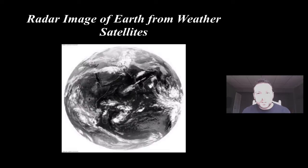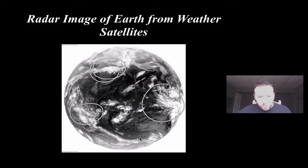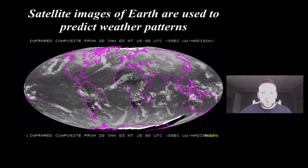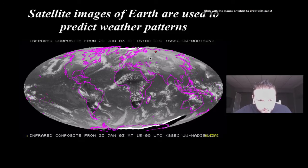This is a radar image from weather satellites, and you can see on here how we have all these regions of cloud cover. We're able to make and predict weather from this cloud cover. Here's some more satellite images that we can use to predict weather patterns. We go down here, we can see some of these spiraling shapes.